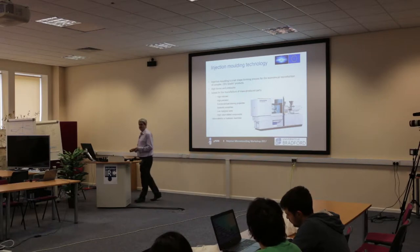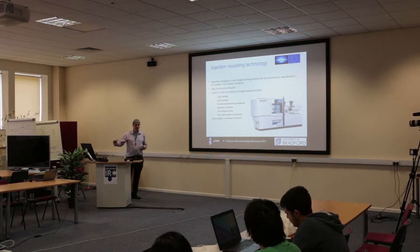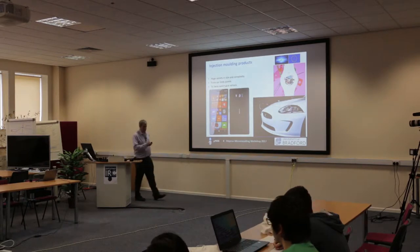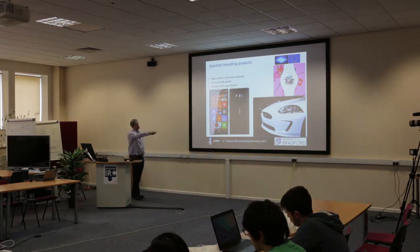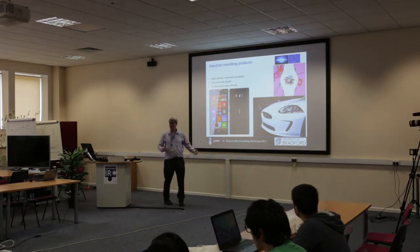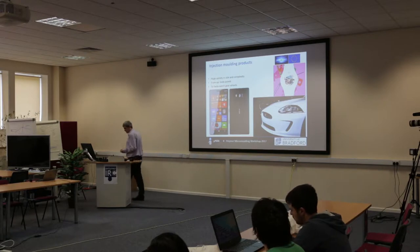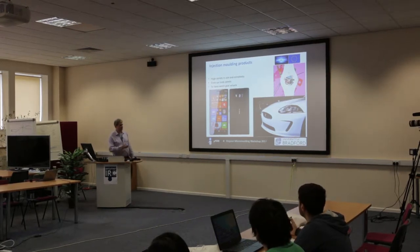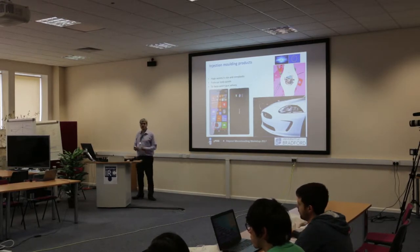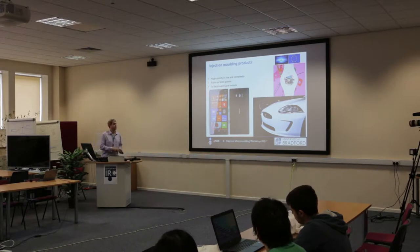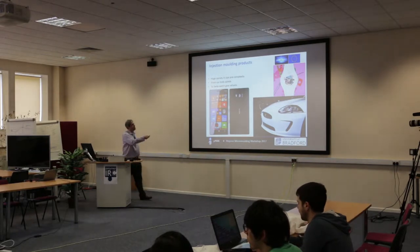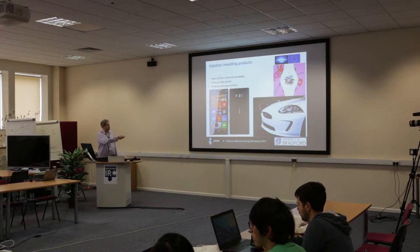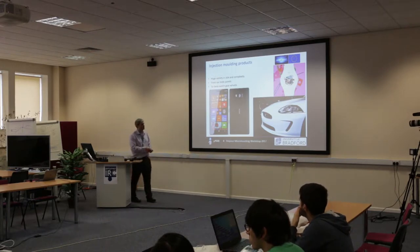Servo-electric machines also use less energy than hydraulic machines for the majority of components. Even though they cost a little bit more, there's a general trend moving that way, particularly with the increased cost of energy. We make a huge variety of components using injection molding — some of the largest mold tools are used for car panels, bumpers, and crash impact zones. There's a whole spectrum down to computer housings, TV surrounds, and all the way down to micro injection molding origins like small plastic watch gears for companies like Swatch.